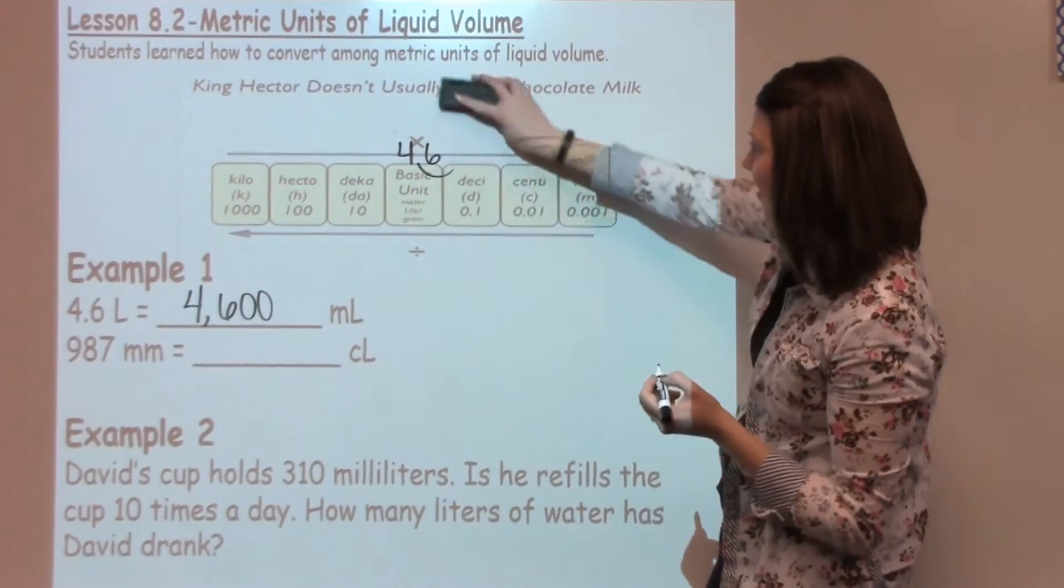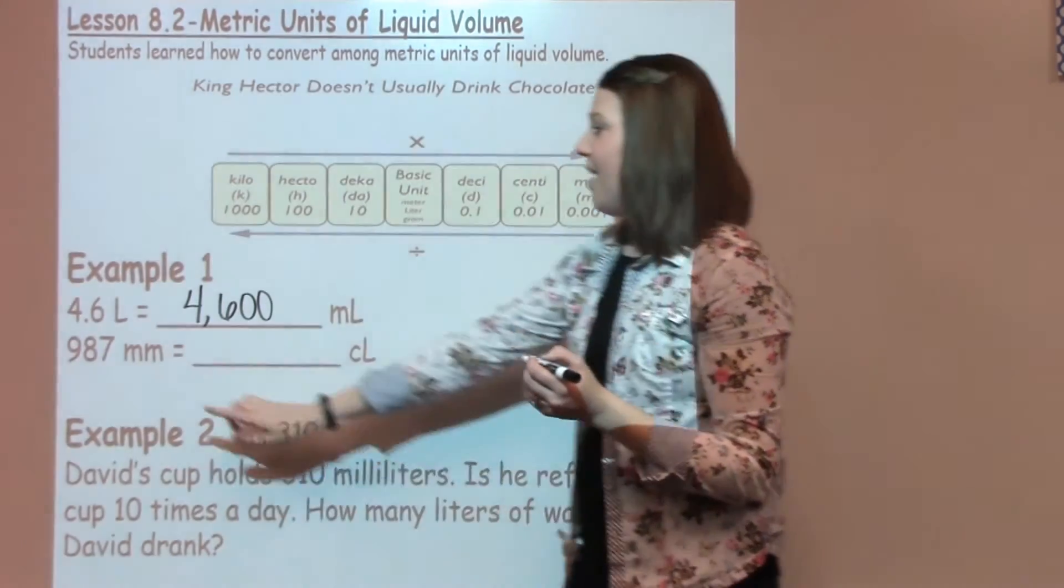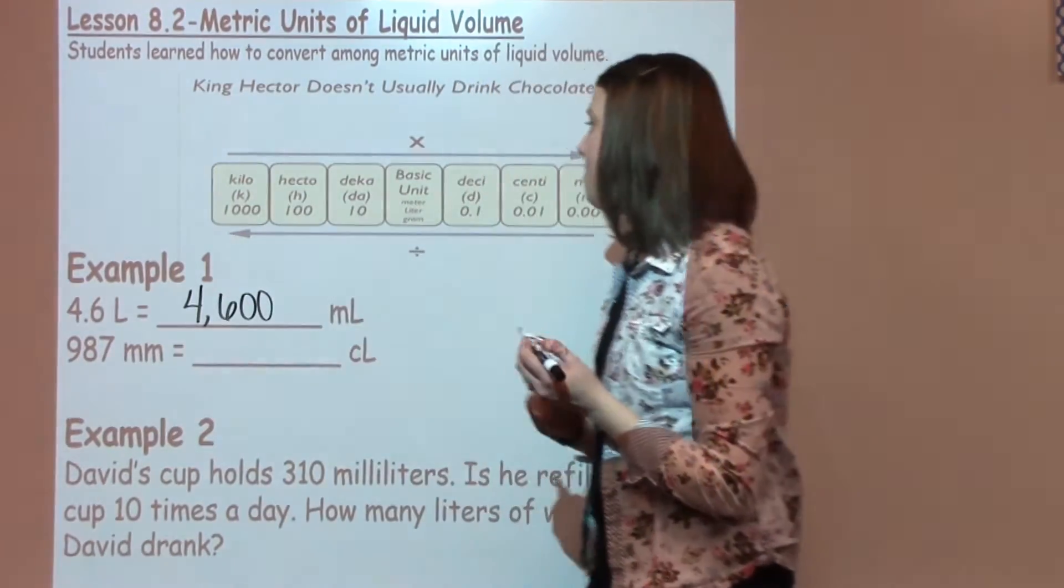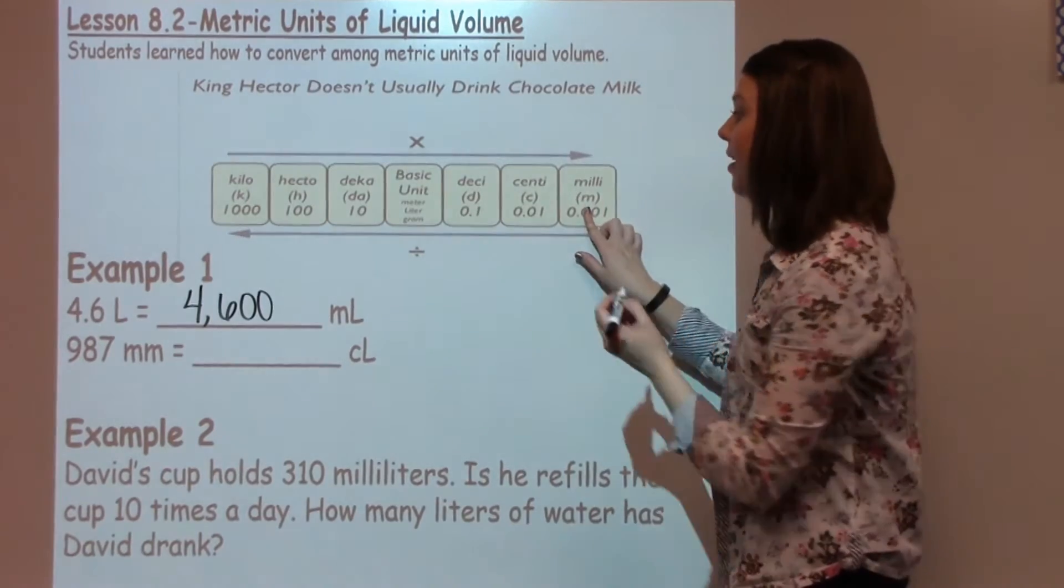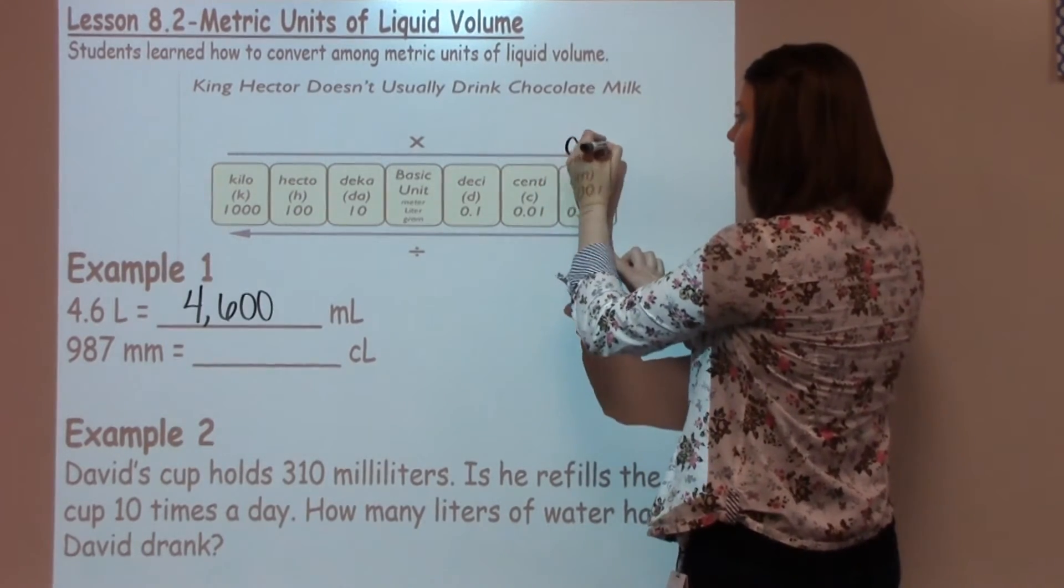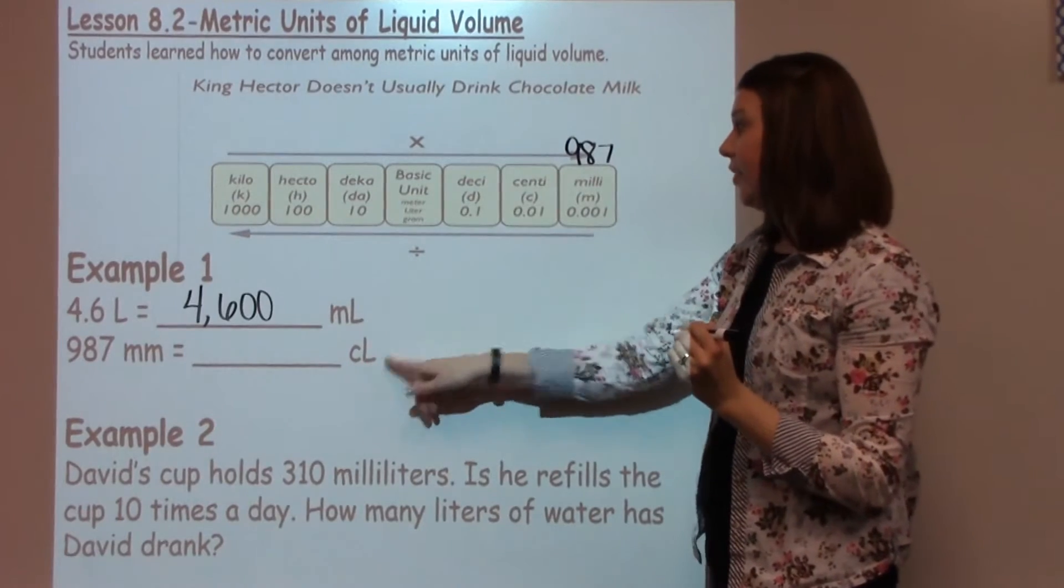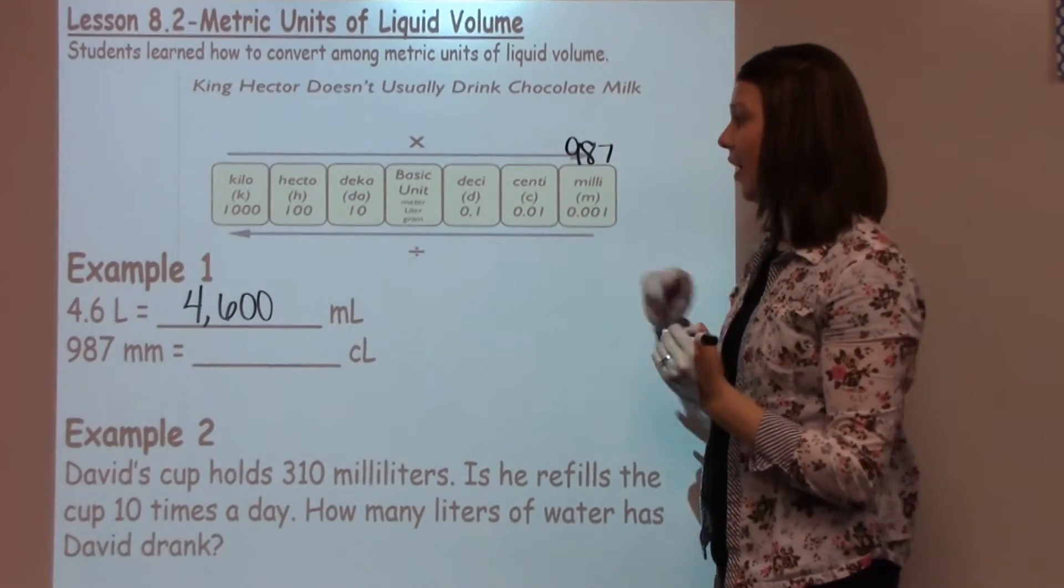Alright, let's look at our second part of example one. I have 987 millimeters. So I'm going to go ahead and go to my millimeters. I'm going to write that number down. I need to go to centiliters, which is just shifting back one.